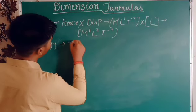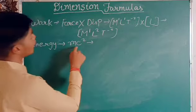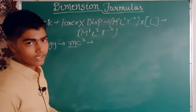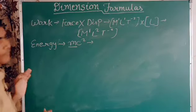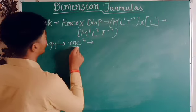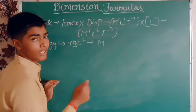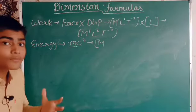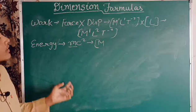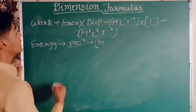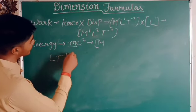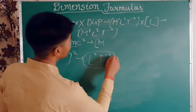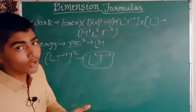For energy, we use the formula E = mc², where m is mass and c is the speed of light. Mass contributes M, and c² means velocity squared. Velocity has dimensional formula L¹T⁻¹, so velocity squared gives L²T⁻². Therefore, the dimensional formula for energy is [M¹L²T⁻²] — the same as work.